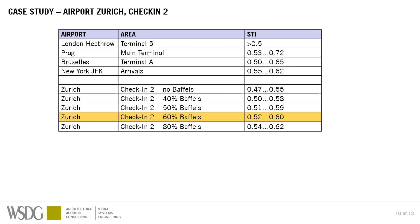Looking at this comparison chart, we have STI values from several other airports shown here. At the bottom you see the Zurich Airport scenarios with the percentages of baffles. Based on experience and comparison with these other airports, the owners of Zurich Airport decided to go for the 60% baffle option — meaning 60% of the ceiling is covered by baffles at one meter distance. The resulting speech intelligibility is shown here as the chosen actual result.